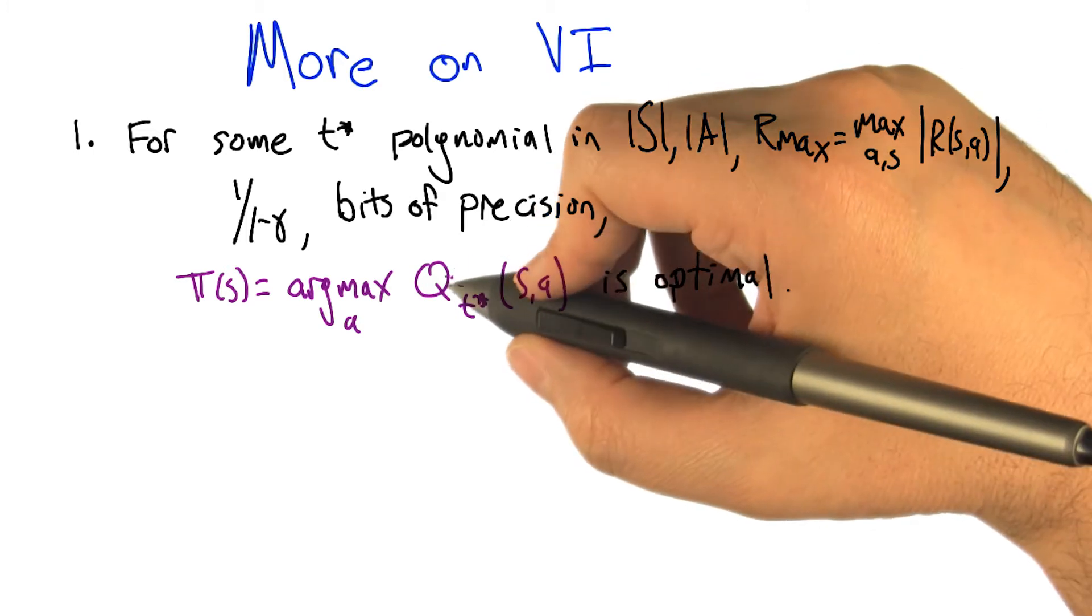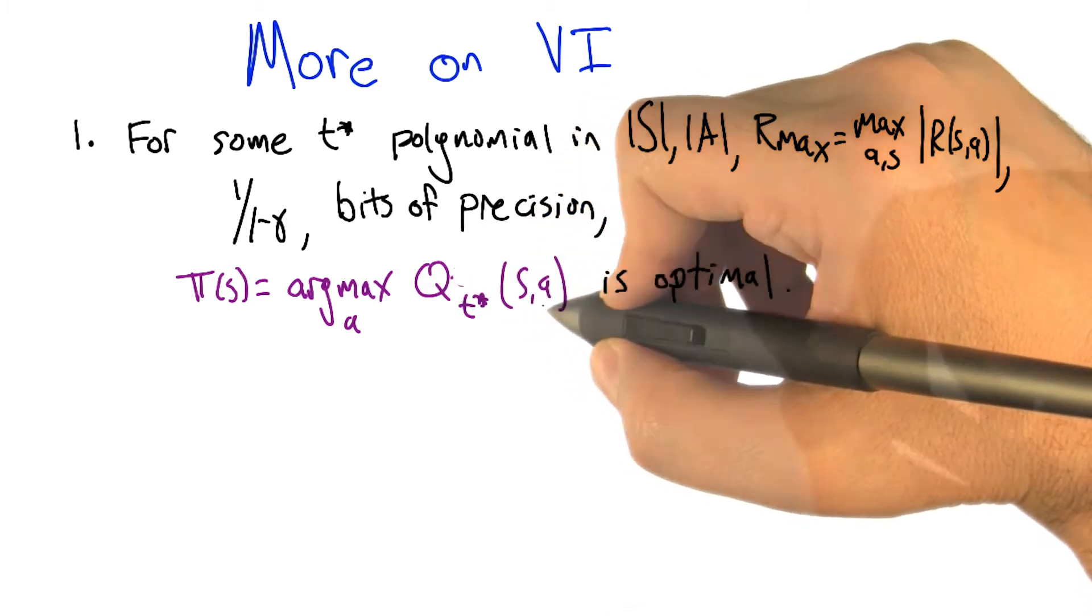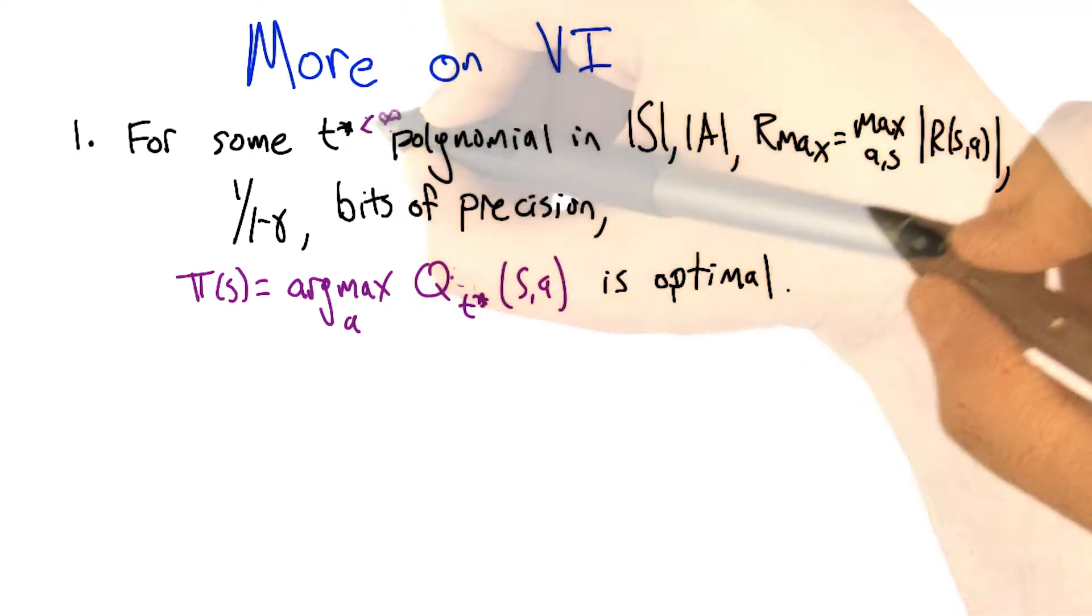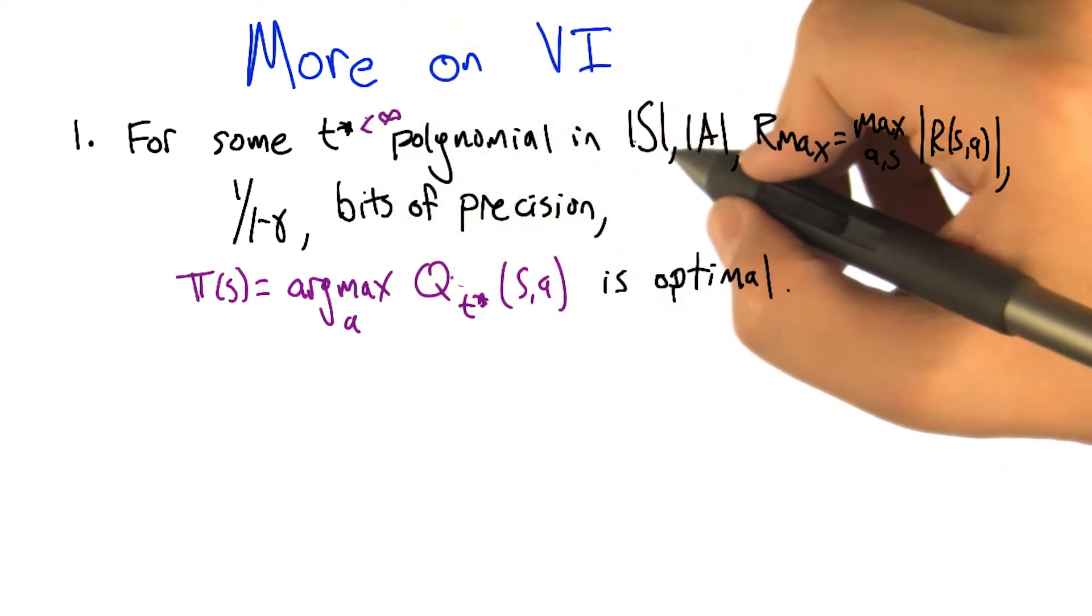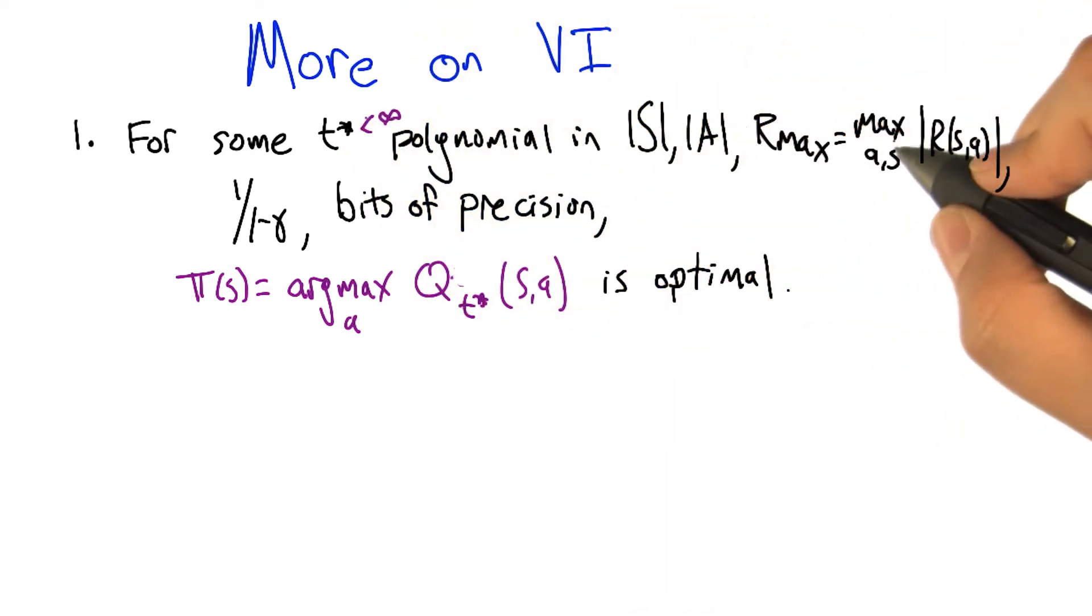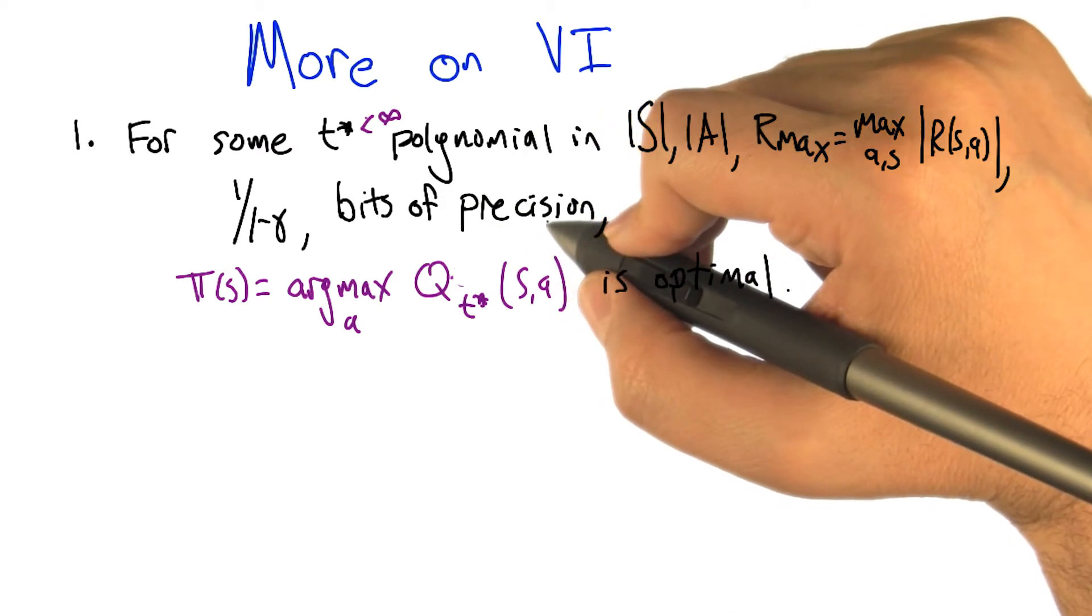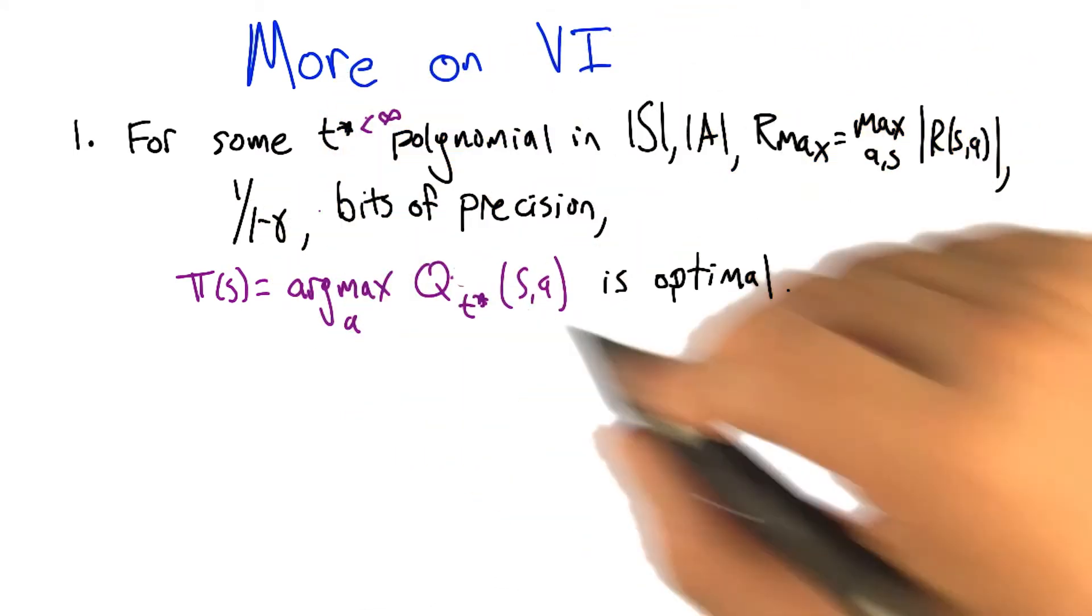But here's an interesting thing we know about the finite horizon. There is some t*, less than infinity, that's polynomial in the number of states, the number of actions, the magnitude of the rewards in the reward function, the number of bits of precision used to specify the transition probabilities, and 1/(1-γ).